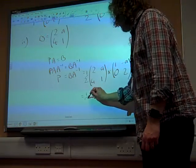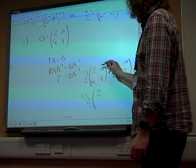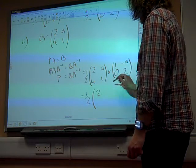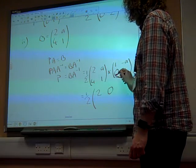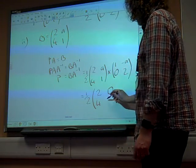Which gives us a half times 2 times 1 plus A times 0, minus 2A plus 2A, 4 minus 0, and minus 4A plus 2.